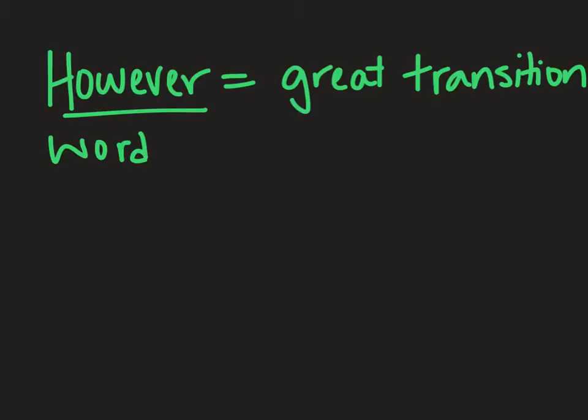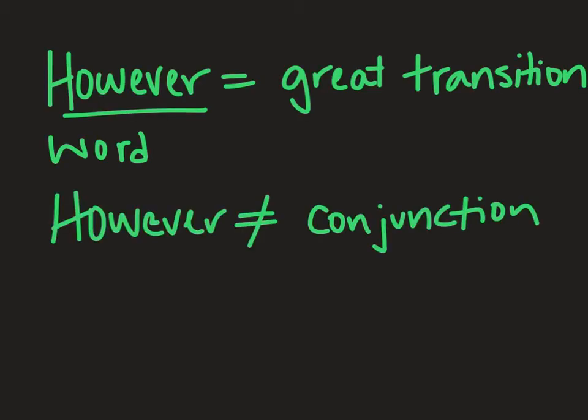And that's really it. 'However' is a great transition word, but it cannot be used to connect two sentences on its own. Otherwise you have a run-on sentence and a comma splice. Please remember this for all future papers, and have the best day of your life.